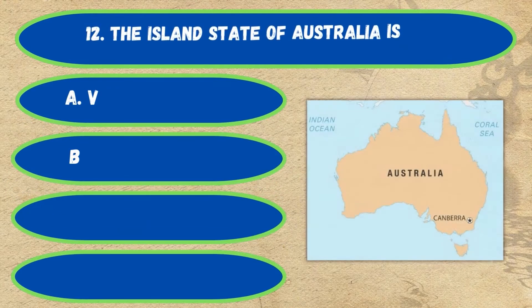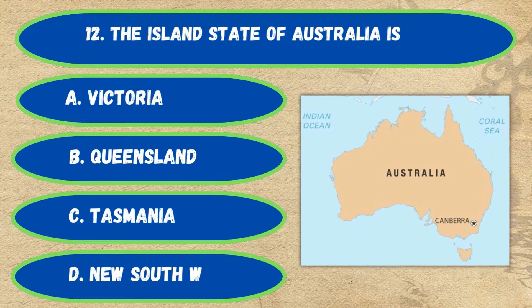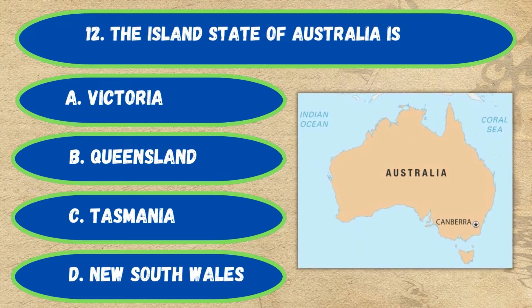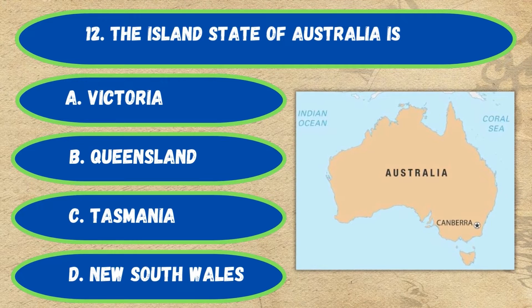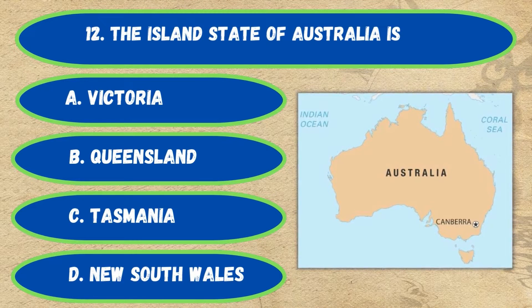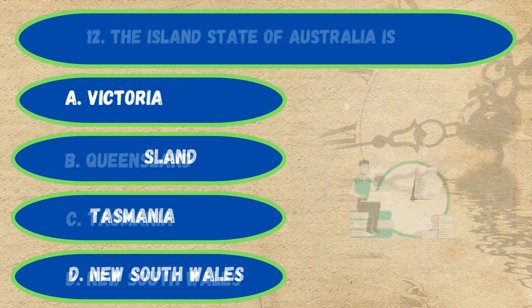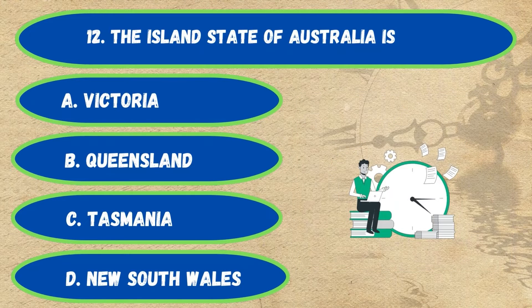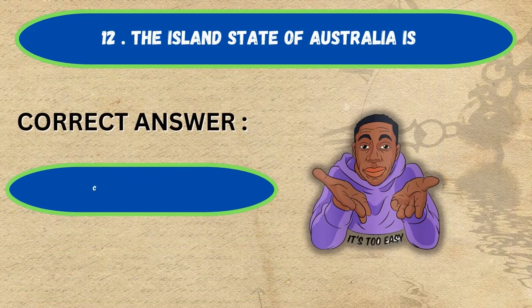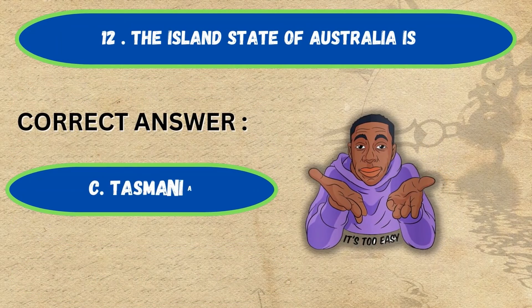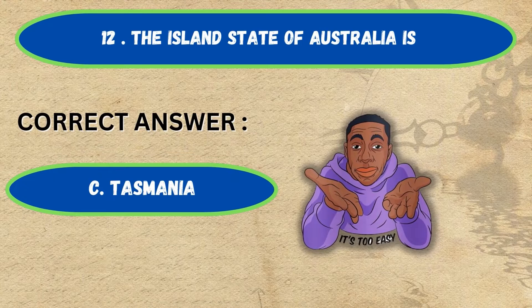Question number 12. The island state of Australia is: option A, Victoria; B, Queensland; C, Tasmania; D, New South Wales. The correct answer is option C, Tasmania.